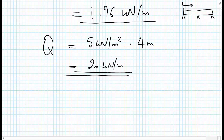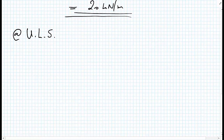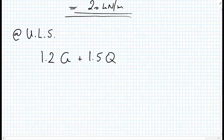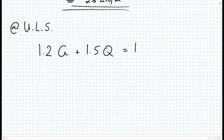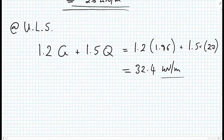For the total loading at the ultimate limit state, we consider: 1.2 times the dead load G plus 1.5 times the live load Q. That equals 1.2 multiplied by 1.96, plus 1.5 multiplied by 20, giving us a total load of 32.4 kilonewtons per meter along the length of the beam.